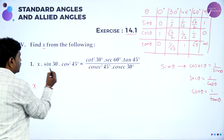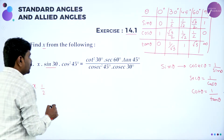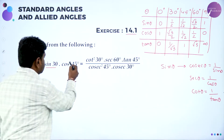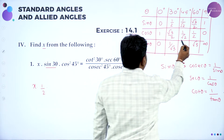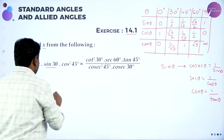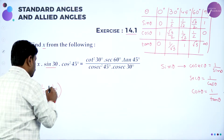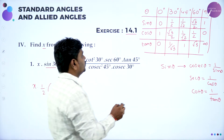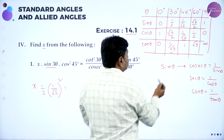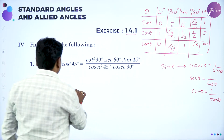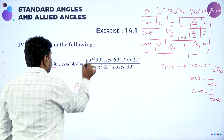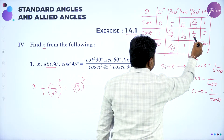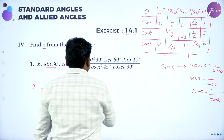Now, x · sin 30 = x · (1/2). Cos² 45 = (1/√2)². Cot² 30: tan 30 = 1/√3, so cot 30 = √3, and cot² 30 = (√3)². Sec 60: cos 60 = 1/2, so sec 60 = 2.